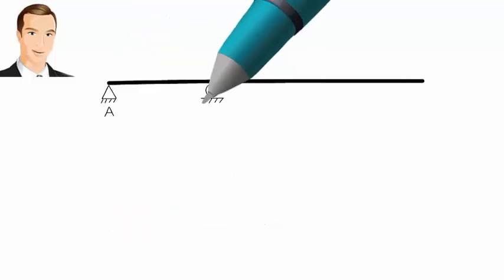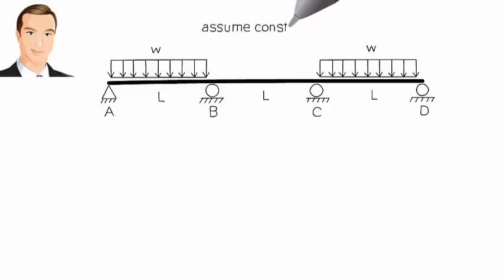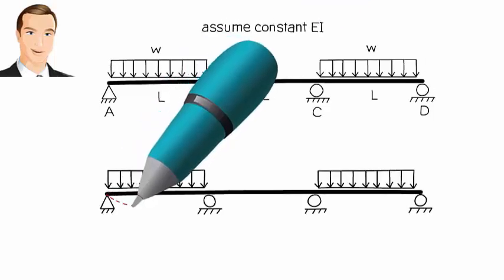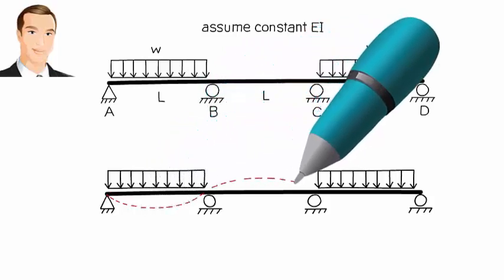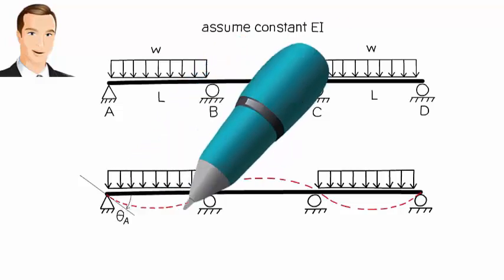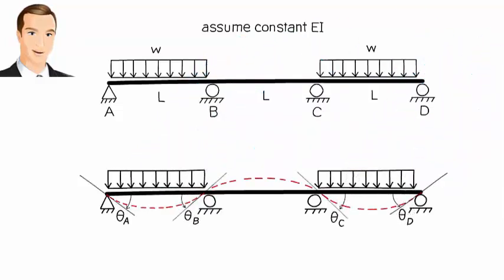Consider the continuous beam shown here. The general deformed shape of the beam is shown. Let's refer to the beam rotation at the supports as theta_A, theta_B, theta_C, and theta_D. These are the unknowns to be calculated using equilibrium equations.